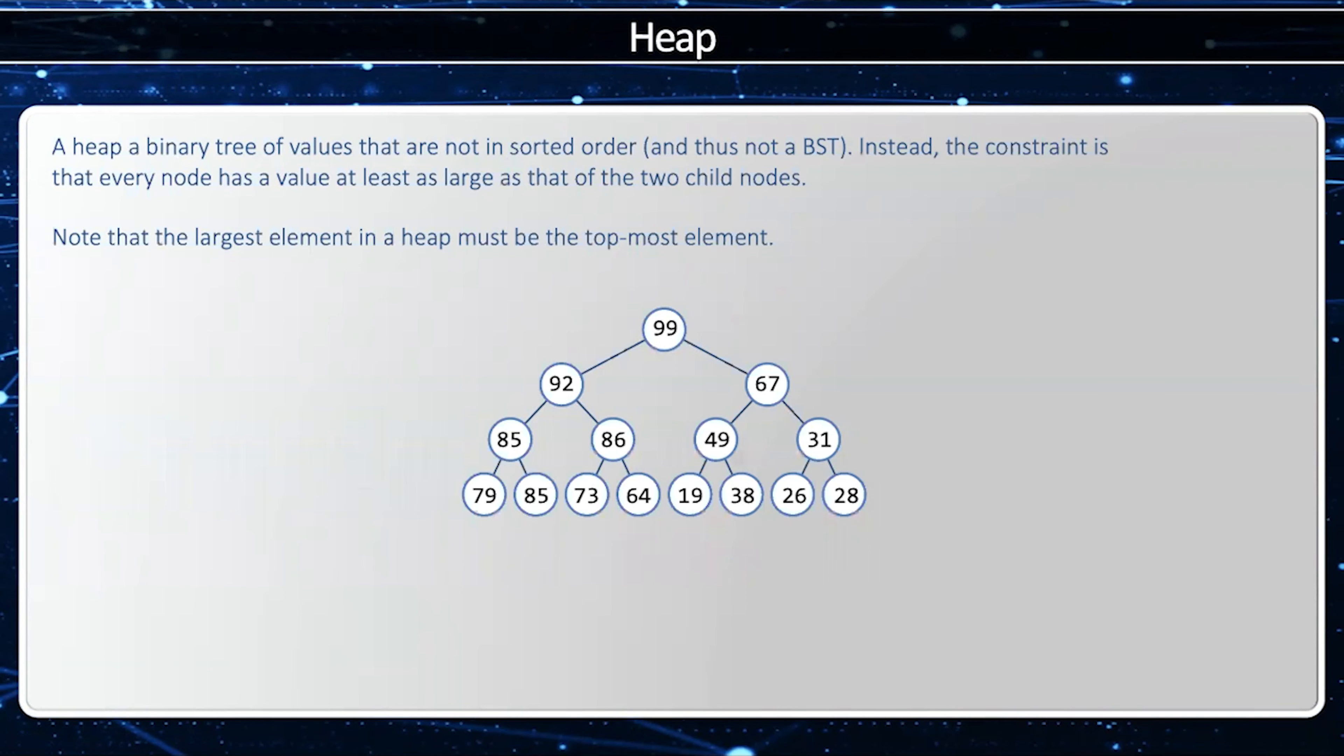This video will show us how to tell if a binary tree is a valid heap. A heap is a binary tree. The constraint is that every element is greater than or equal to the two child elements. This is a different constraint than we use with the binary search tree.